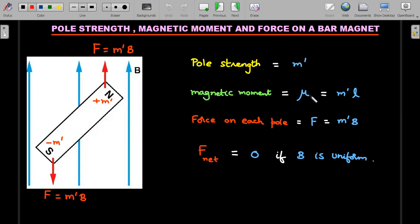So if the magnet pole strength is defined in SI units as m prime, then the magnetic moment is defined as mu, which is m prime into, similar to your charge into length in electric dipole, the magnetic pole strength into L. L is the length of the magnet, that would be considered as a magnetic moment. The force on each pole, as I expected you to understand by now is m prime into B, and this force becomes zero if B is uniform.